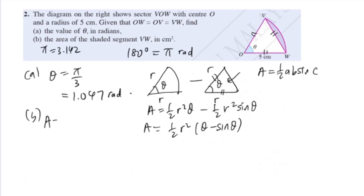Using the formula: area equals half times 5 squared times (1.047 minus sine 1.047). Remember when using this formula your angle must be in radians — change your calculator to radian mode. Using your calculator you should get 2.26 cm squared.